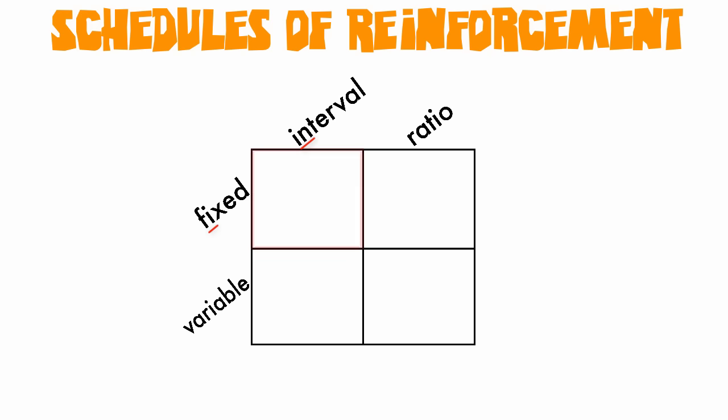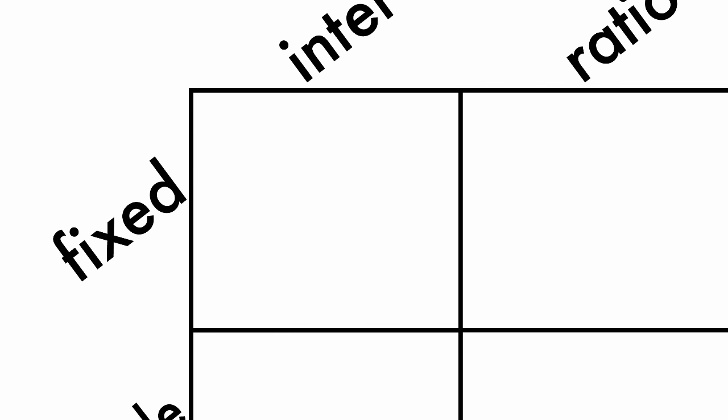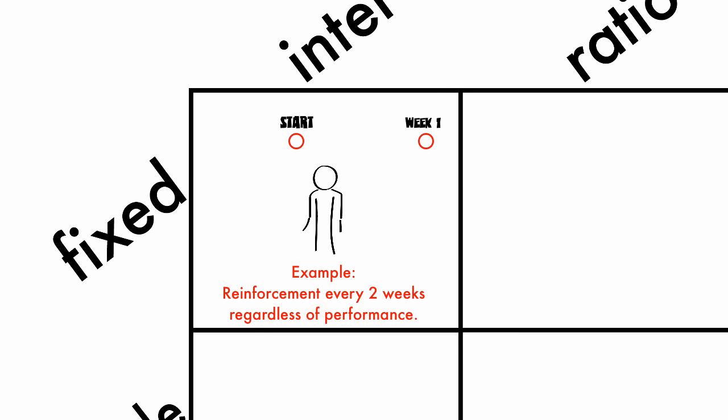We'll start with Fixed Interval. Fixed Interval requires that you wait a specified period of time after completing the correct response before you'll be reinforced. An example of Fixed Interval is someone who gets paid every two weeks at their job. They have to show up to work and do all their assigned tasks, but no matter how fast they work or how many tasks they complete, they don't get paid until after the two weeks have transpired.